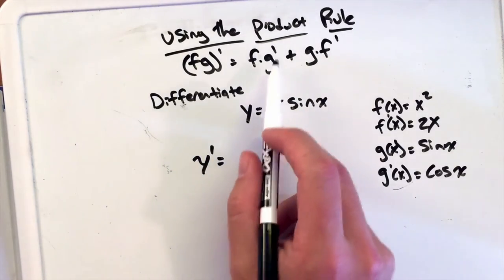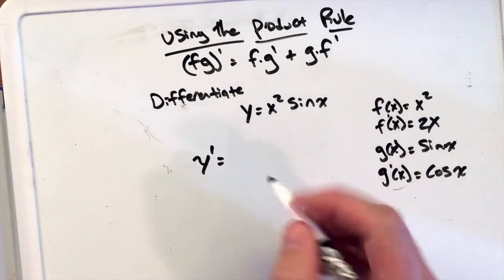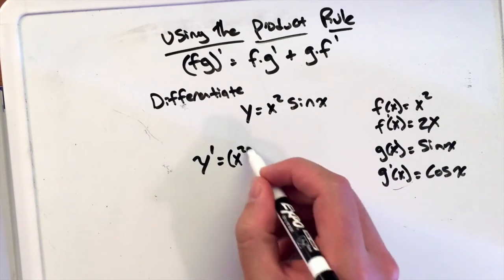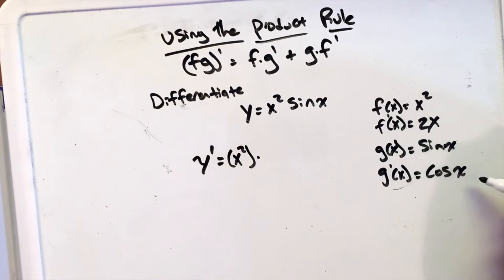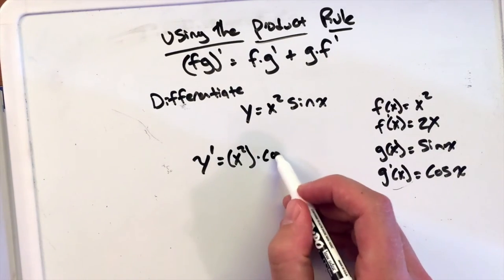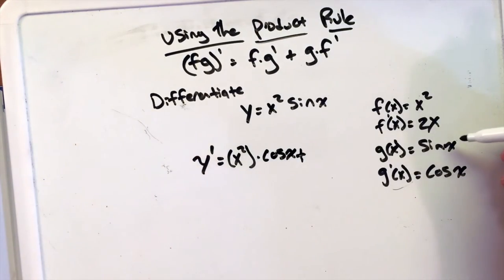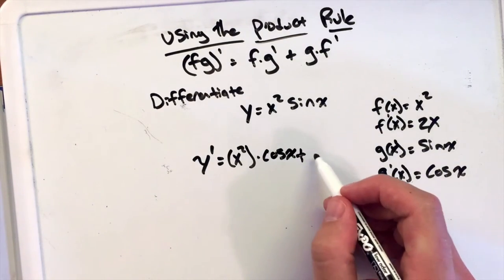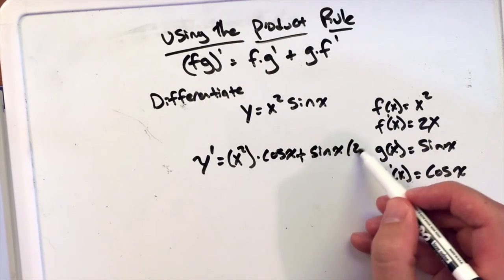So if I want to differentiate this, I'm going to follow the formula that's written up here and it says that f times g prime, so f being x squared, and this formula is our f, times g prime, which we have stated to be cosine of x, plus g, which is sine of x, plus sine of x, times f prime, which is 2x.